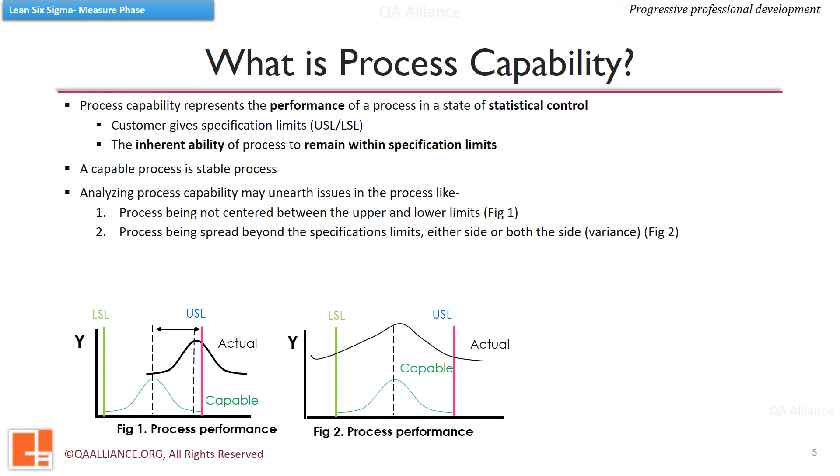Third case could be when either the process is centered between the specification limits, nor the process spread is low. Such a process will cause lots of defects and will be highly incapable.